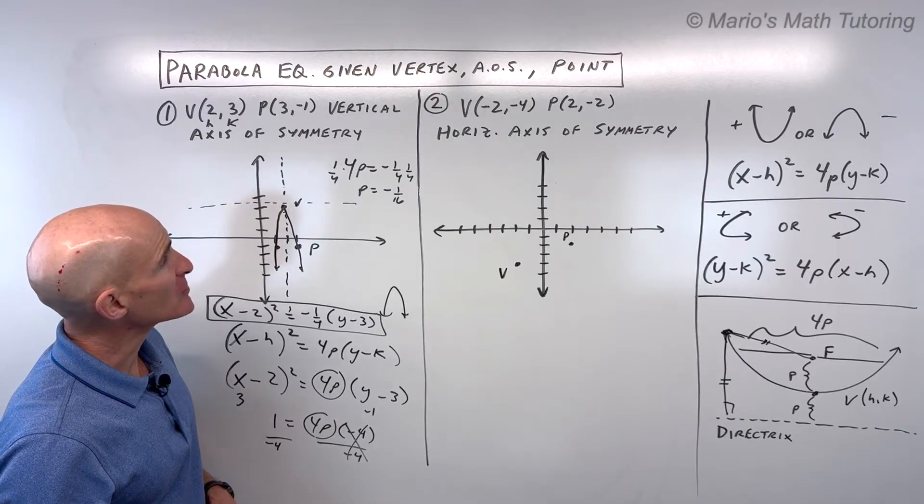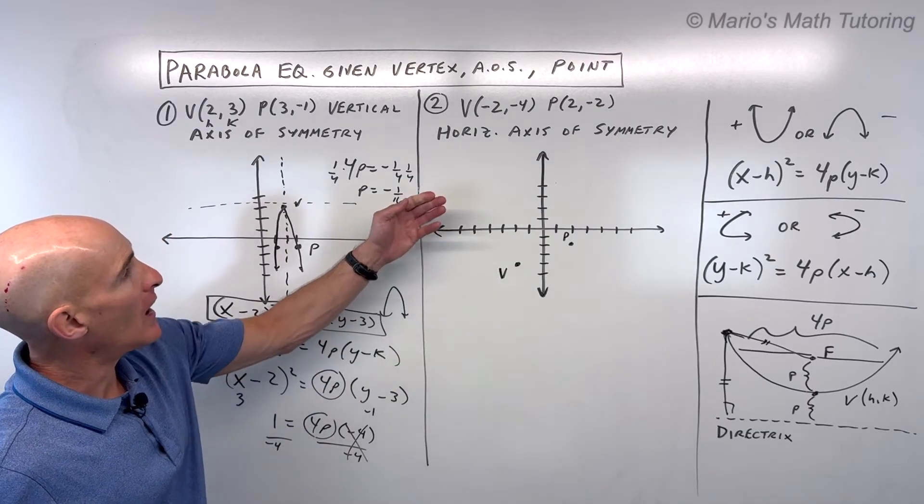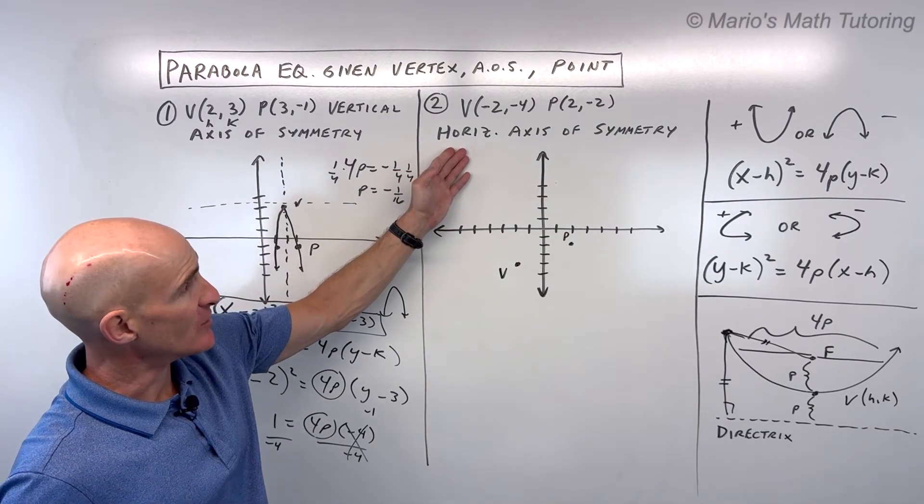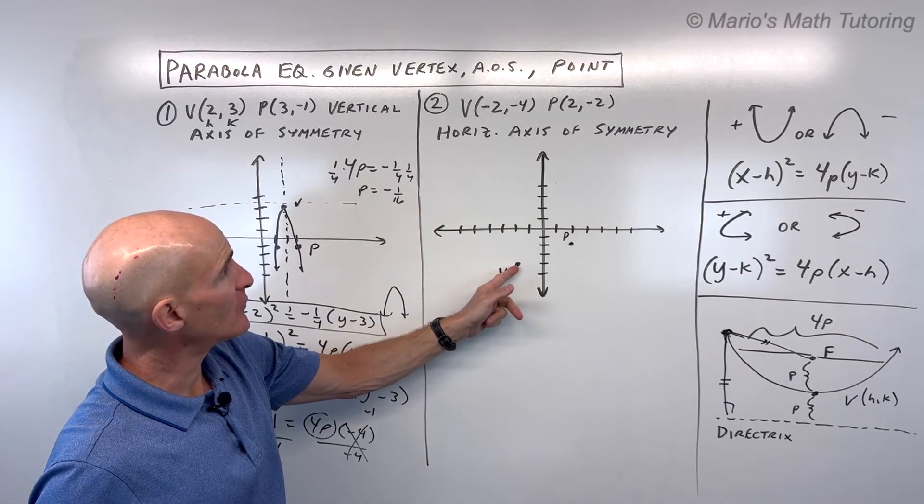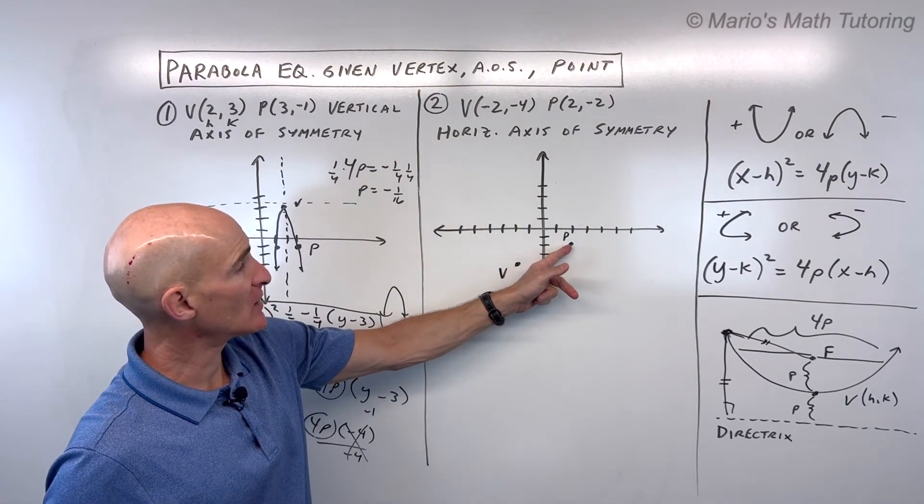So let's look at number 2 now. So for number 2, we've got a horizontal axis of symmetry. The vertex is at (-2,-4), and it goes to this point (2,-2).